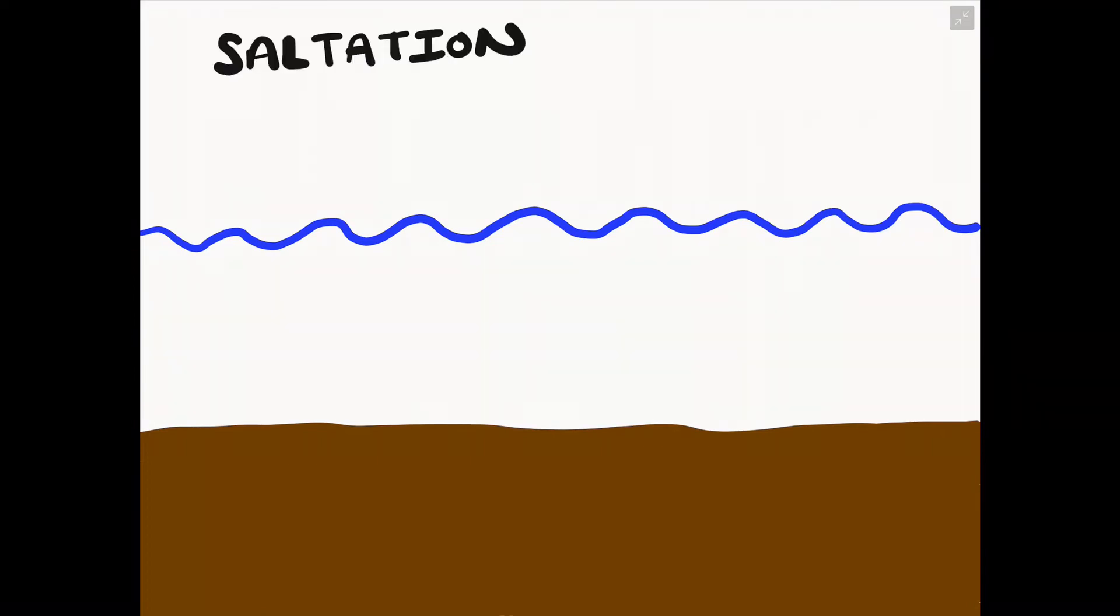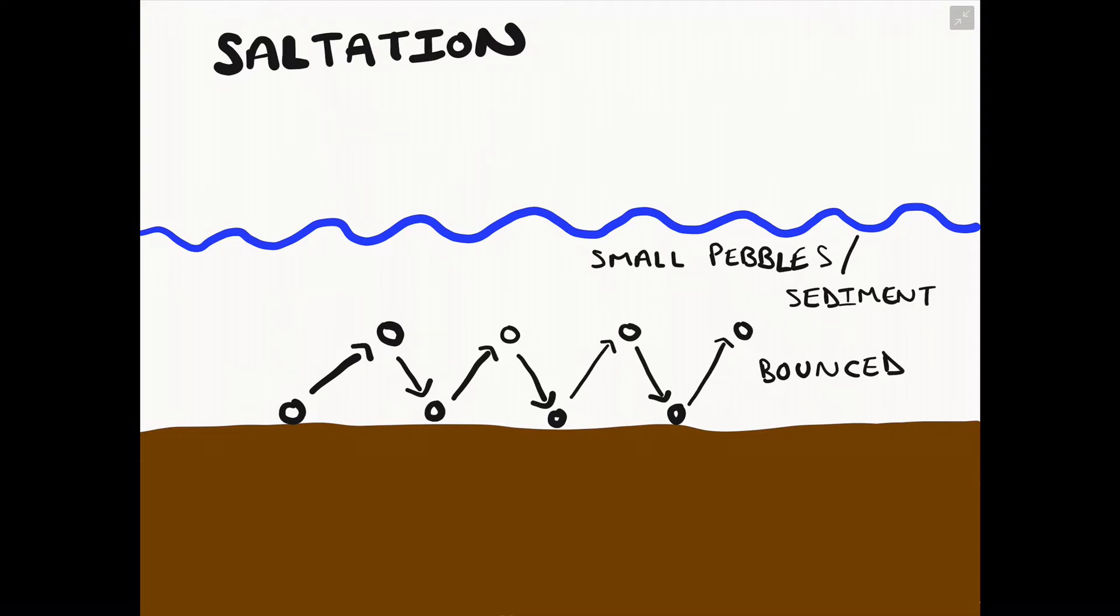The second transportation method is known as saltation. This involves smaller particles such as pebbles or small stones being lifted up by the sea when it has enough energy, but then dropped when it has lost its energy. This results in a bouncing movement where the stones or pebbles are moved along the seabed through this bouncing motion.